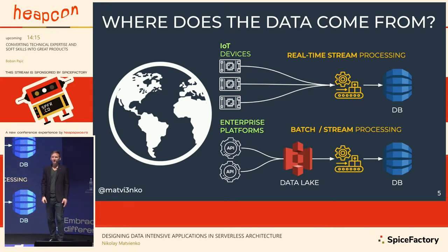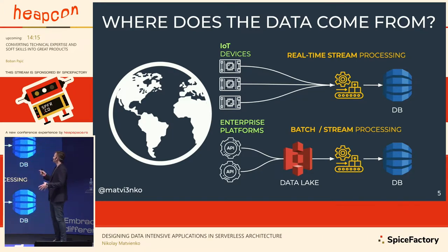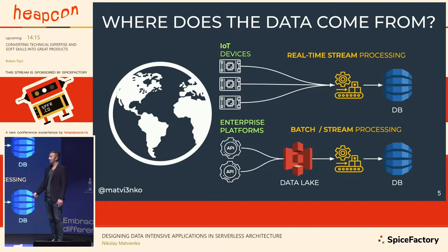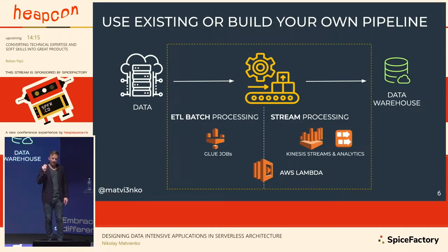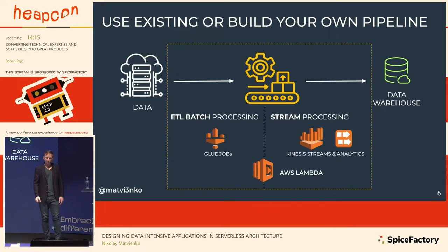The first question is: where does the data come from? It might come from billions of IoT devices over the world — we have such a project at Grid Dynamics where data is processed in real time and stored to the database. Or it can come from different enterprise platforms, data centers, and API services, going to a Data Lake and then processed in batch or stream pipelines to the database.